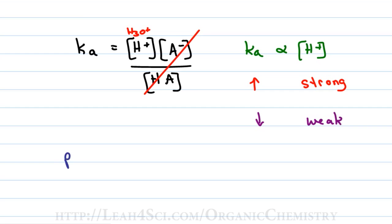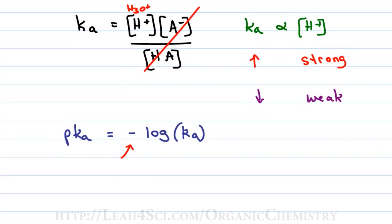Another equation you covered in Gen Chem is that pKa equals negative log Ka. We're not going to solve this — no calculator, no logs — but what we want to recognize is that the negative is going to flip the equation. If the Ka is high and you apply that negative log, the pKa is going to be low. If the Ka is low, the pKa is going to be high — so they are inversely proportional, or you can think of pKa as proportional to one over Ka.